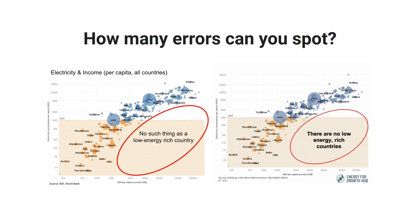The original version of that graphic seems to come from a guy called Todd Moss. He published it in his Substack newsletter. To give a bit of context, he's mostly talking about increasing energy access in very poor countries, which is generally a good thing.